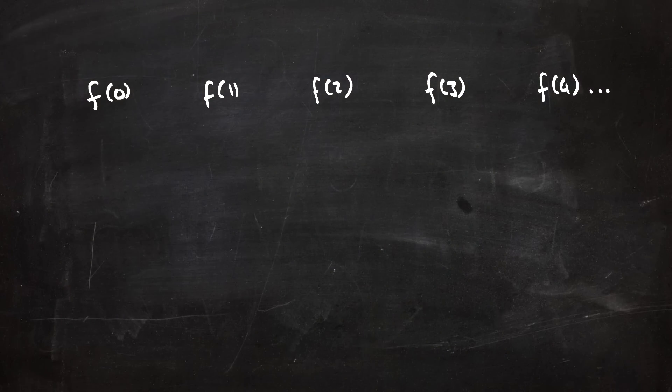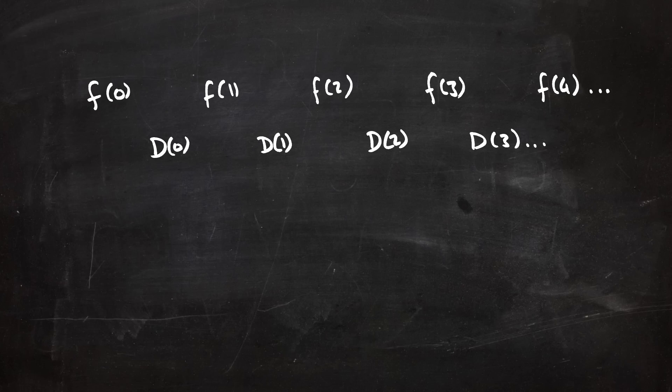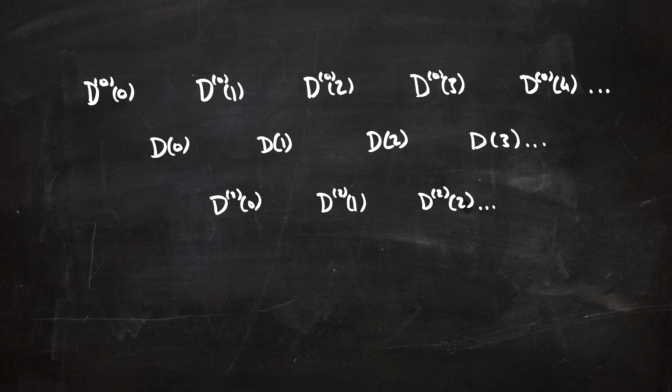So what we're going to do is take some sequence - let's say the first few values are f of zero, f of one, f of two, and so on. We'll call the first differences d of zero, d of one, d of two, and so on. And the second differences d prime of zero, d prime of one, and so on. And just for fun, let's call the f's the zero differences. So we have d zero of zero, d zero of one, and so on.